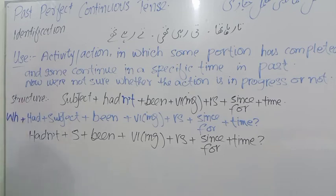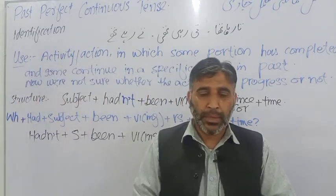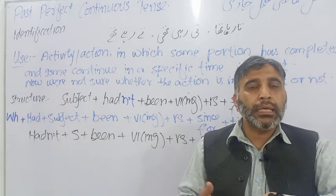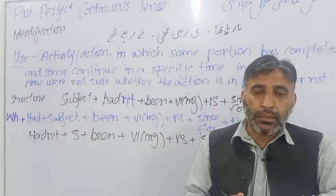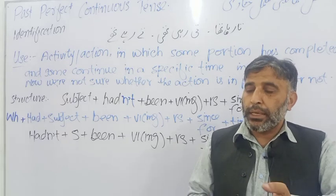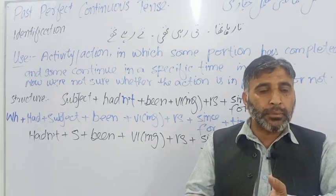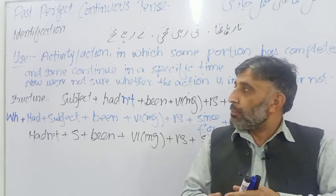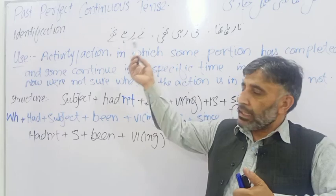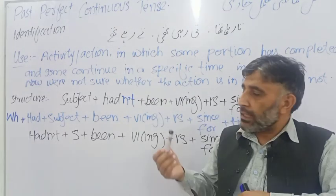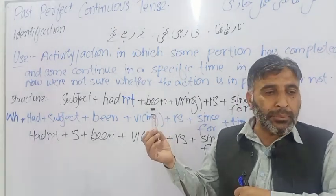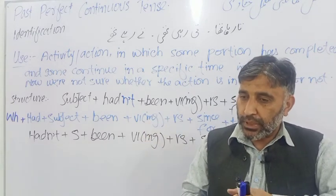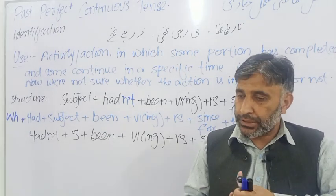For example, if someone asks us to translate into English, main panch salyon se Saudi Arabia me kam karta raha tha, if we just look at this sentence, it seems a little bit difficult to translate it into English. But if we know that karta raha tha is past perfect continuous tense, and in past perfect continuous had been plus first form plus ing is used, then it becomes very easy for us to translate it into English.